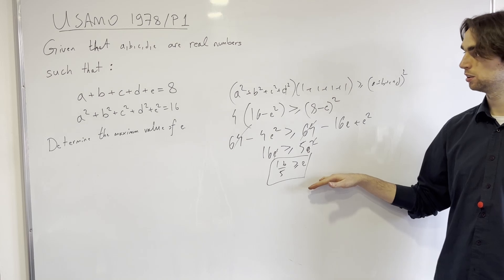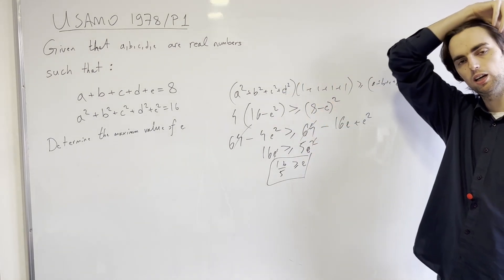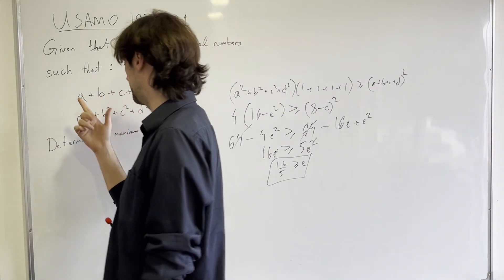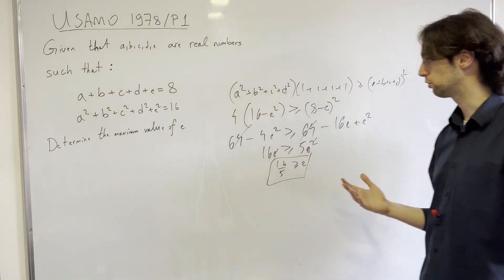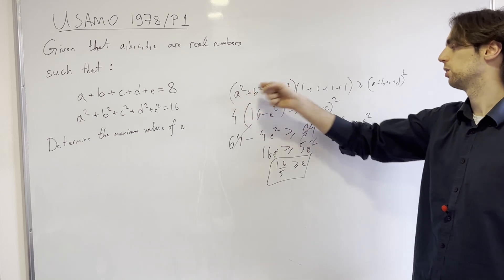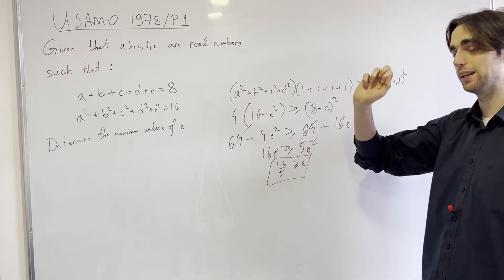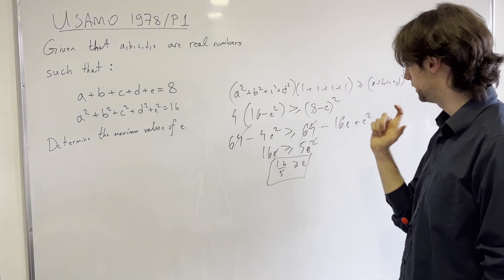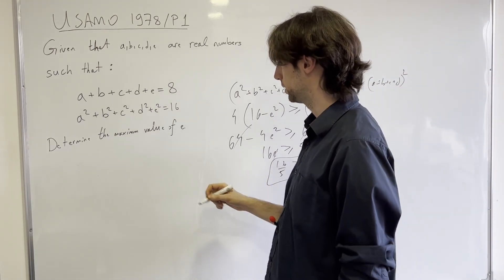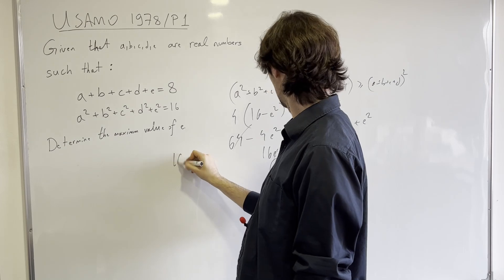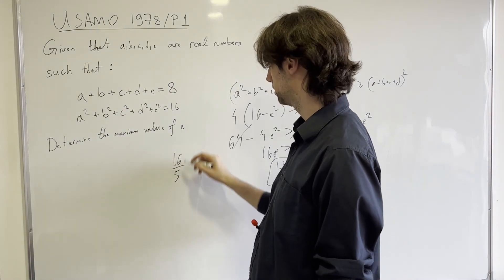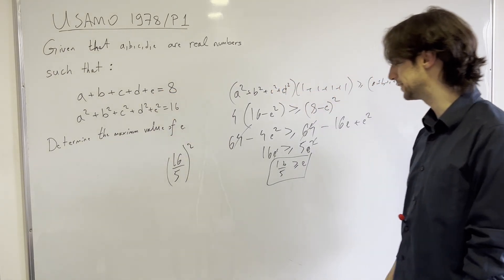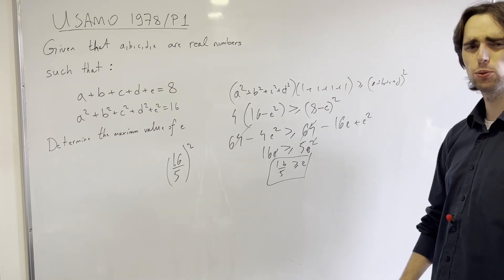Are we done? Not quite — we need to show that there actually exist values a, b, c, d such that this maximum is achieved. What needs to hold true? We need the ratios to be equal: a over 1 equals b over 1 equals c over 1 equals d over 1, and a squared over 1 equals b squared over 1, and so on. If e is 16 over 5, let's see what we get. We get 8 minus 16 over 5, and we're thinking: is a equal to b equal to c equal to d?